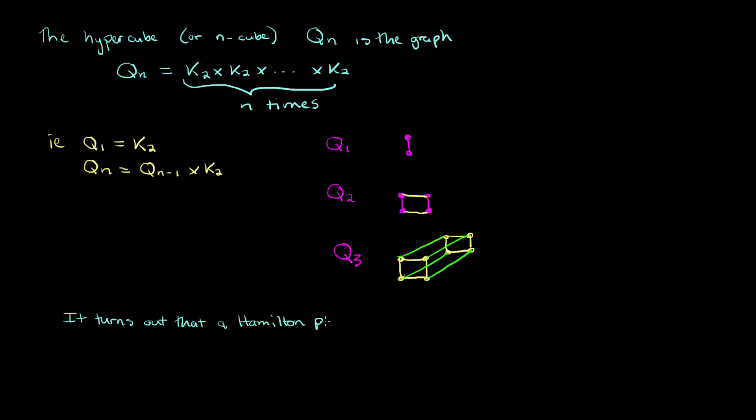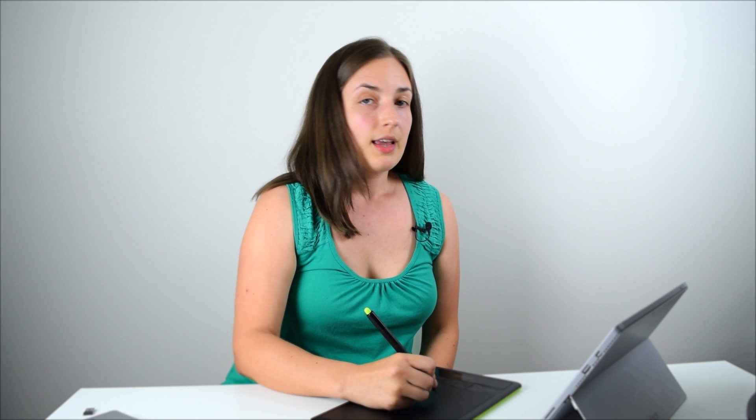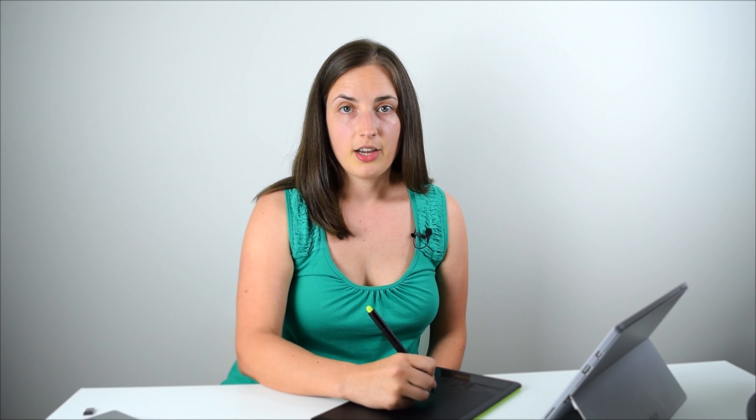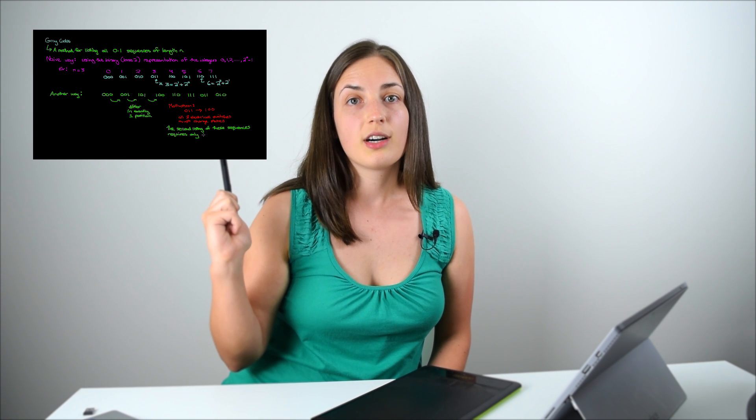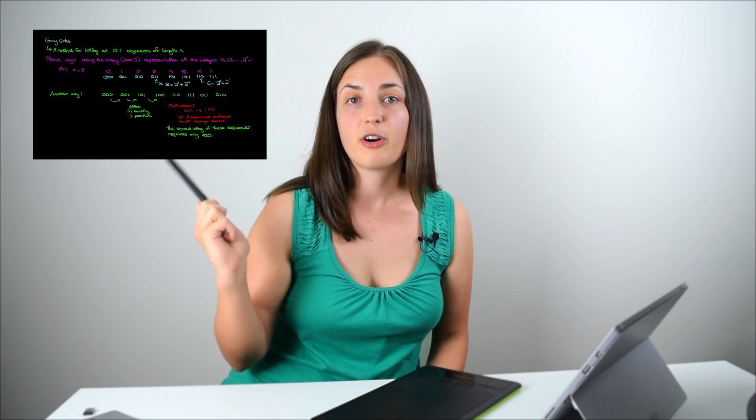Also, it turns out that a Hamilton path in an appropriately labeled hypercube is equivalent to something called a gray code, which is used in computer science, for example, in encryption or error correction. And if you'd like to learn more about gray codes, just click here or see the links in the description below for a video about them.